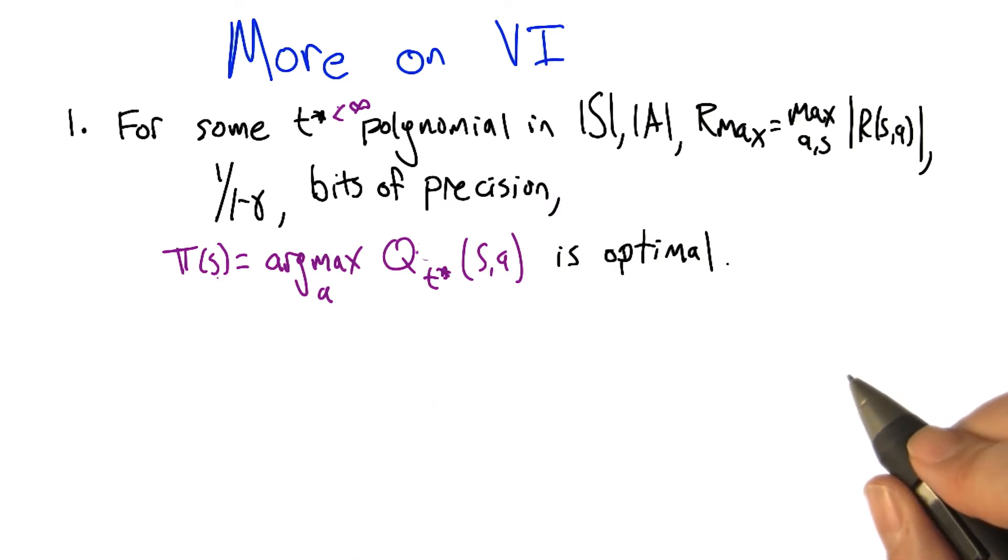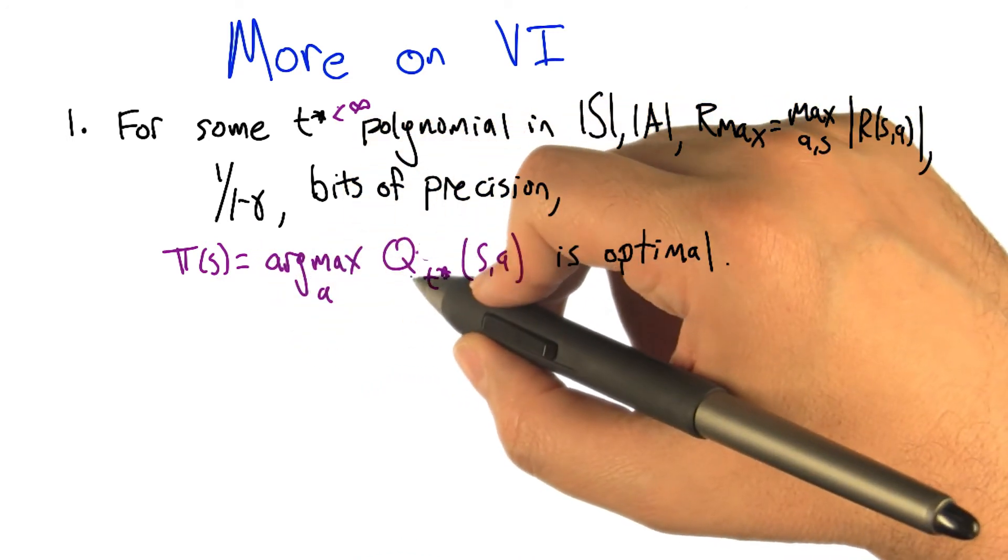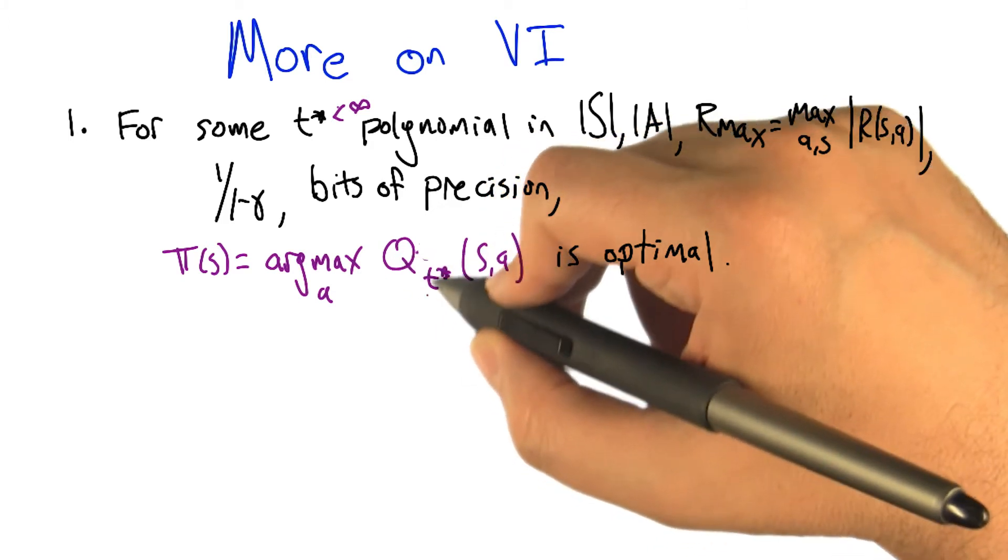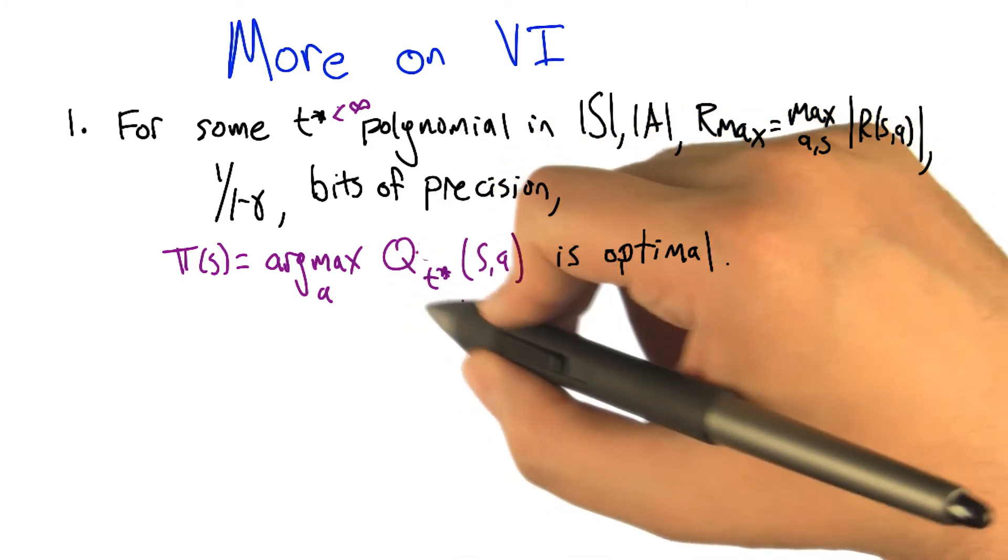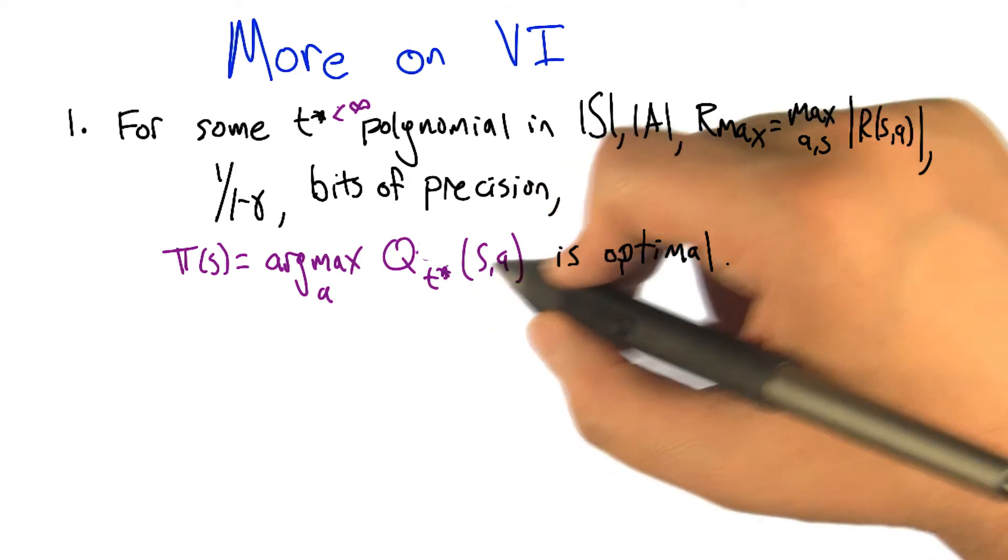What we're saying here is that we know in the limit, if we run value iteration for an infinite number of steps, then the q function we get out at that point - the greedy policy with respect to that q function is optimal.